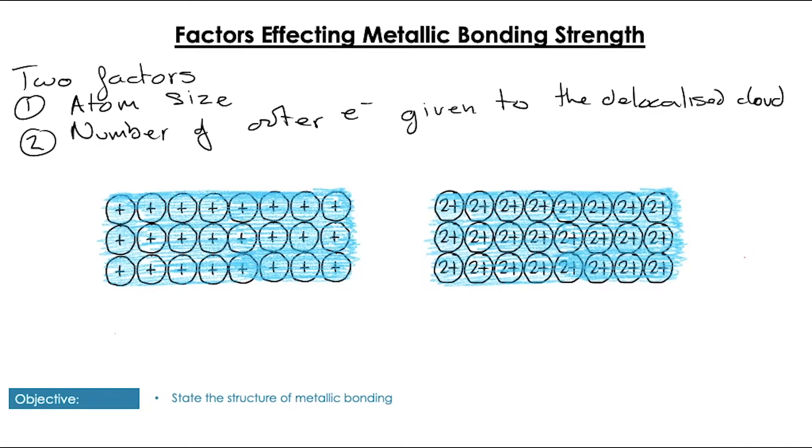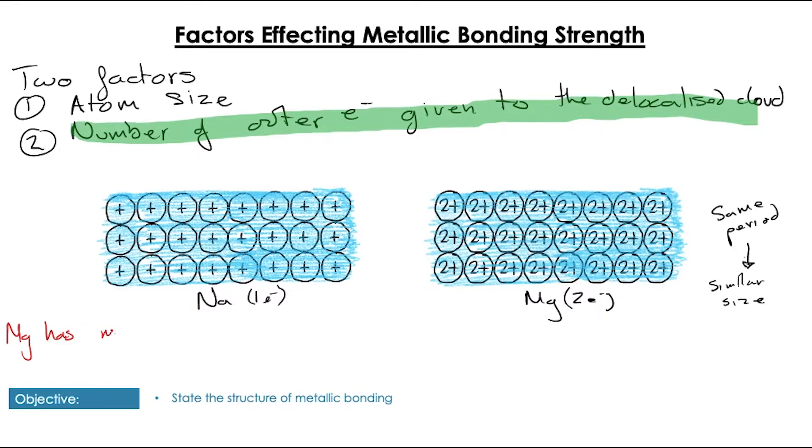Looking at the number of electrons given to the delocalized cloud, then, instead, we're going to compare atoms that are of roughly the same size. So, here we're going to look at sodium and magnesium that are in the same period. Sodium having one electron in the outer shell and magnesium having two. So, sodium forms a one plus charge and magnesium forms a two plus charge. And, if we evaluate these by the same criteria we did for the size of the atoms, if the size is roughly the same, but we have an increased charge in the case of magnesium, then we have an increased charge, which is an increased attractive force over a roughly similar area, and therefore an increasing charge density. This means that if we have ions of roughly the same size, but with a larger charge, the ions with a larger charge are going to have an increased attractive force, and thus increasing the bonding strength between those ions and the delocalized cloud of electrons.